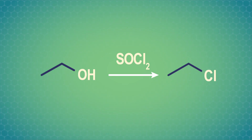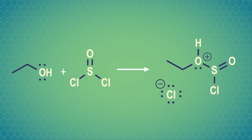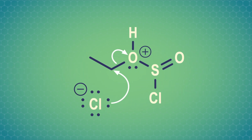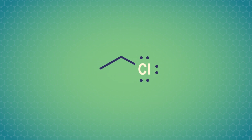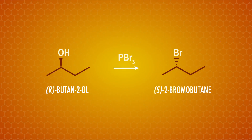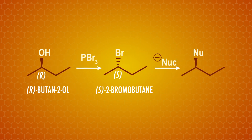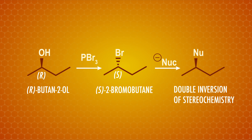The final option, thionyl chloride, only works for primary and secondary alcohols. First, the alcohol and thionyl chloride react to form an oxonium ion intermediate. The chloride ion then attacks the carbon next to the oxygen, giving the electrons back to oxygen and neutralizing it, giving the alkyl chloride. Most of the alcohol-to-alkyl-halide reactions involve SN2 mechanisms, which flips the stereochemistry of chiral carbons. So if we add a nucleophile in an SN2 reaction later, we'll get double inversion of stereochemistry, returning to the stereochemistry of our starting alcohol.